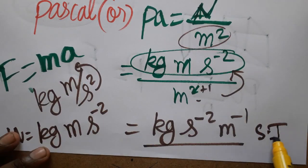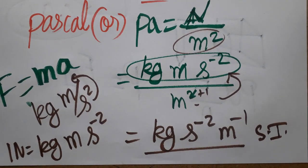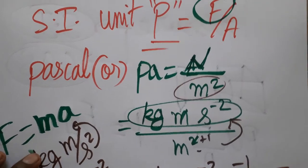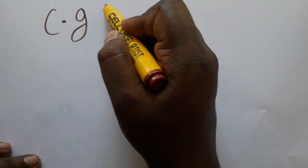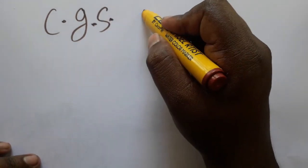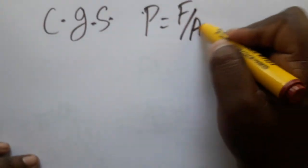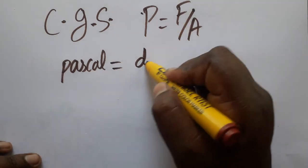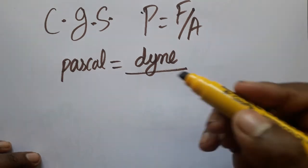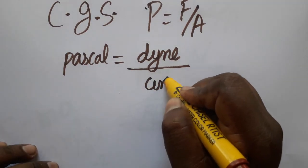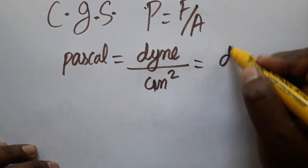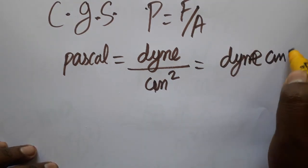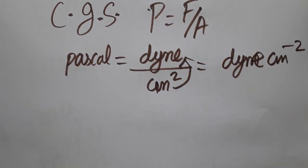Now we will express Pascal in the CGS system. Pressure still equals force per unit area. In CGS, force is represented in dyne and area is centimeter squared. So pressure equals dyne per centimeter squared, or equivalently dyne·cm⁻².